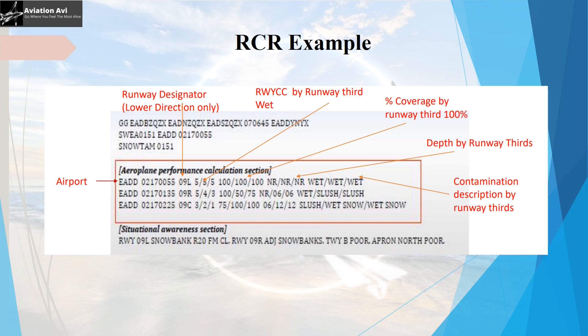Now let us look at the situational awareness section, which gives the pilot information about the apron, taxiway, snow banks, and chemical treatment. Runway 09R Left has snow banks 20 meters right of the centerline. On runway 09R Right, there are adjacent snow banks. The taxiway Bravo condition is poor and the north apron is also poor. This sums up an example of how an RCR is generated and reported.